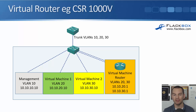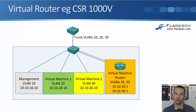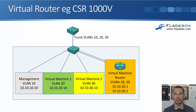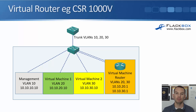That big blue box is still one physical host. On it, we run virtual machine 1 and virtual machine 2, and then another virtual machine running routing software like Cisco CSR1000V — not Windows or Linux, but actual routing software that can route between those different virtual machines.